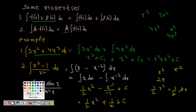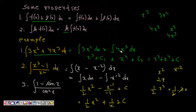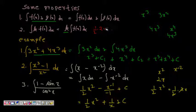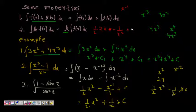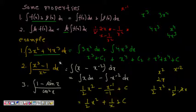We can verify by differentiating the answer. Differentiating (1/2)x² + 1/x gives (1/2)·2x + d/dx(x⁻¹) = x + (−1)x⁻² = x − 1/x², and the constant disappears. This equals x − 1/x², which can be written as (x³ − 1)/x², confirming our integral is correct.